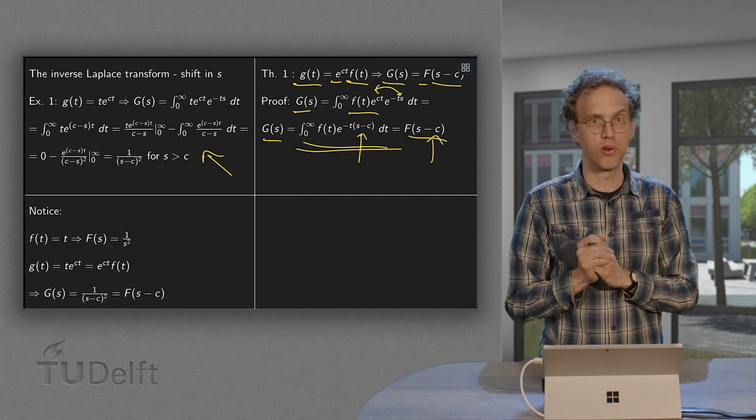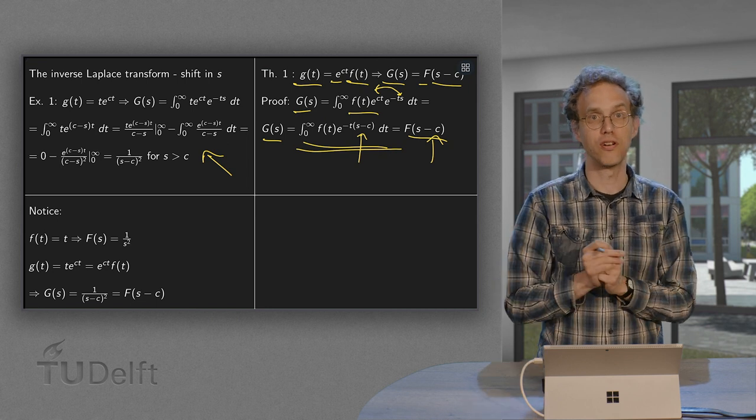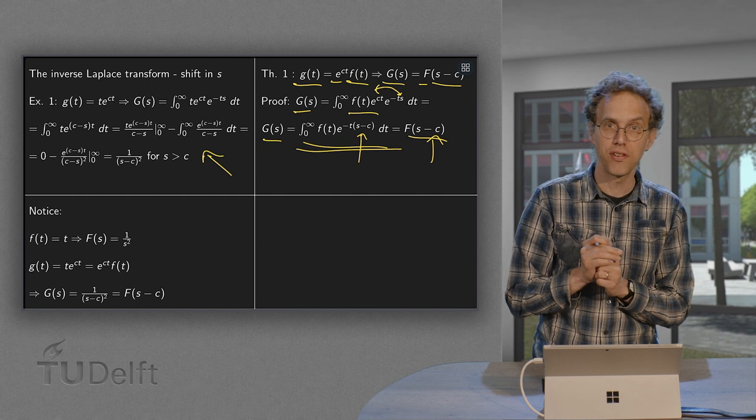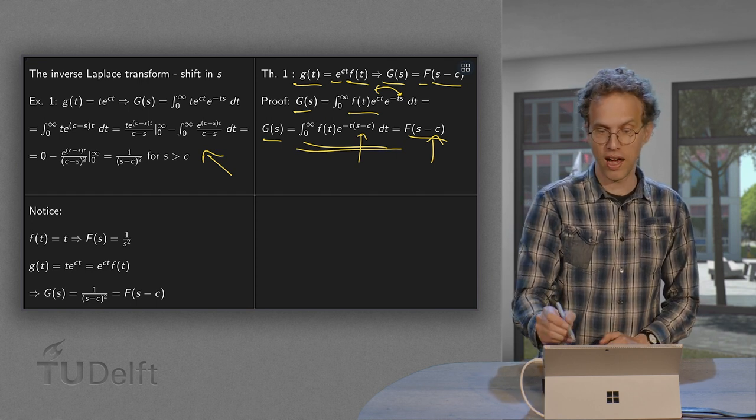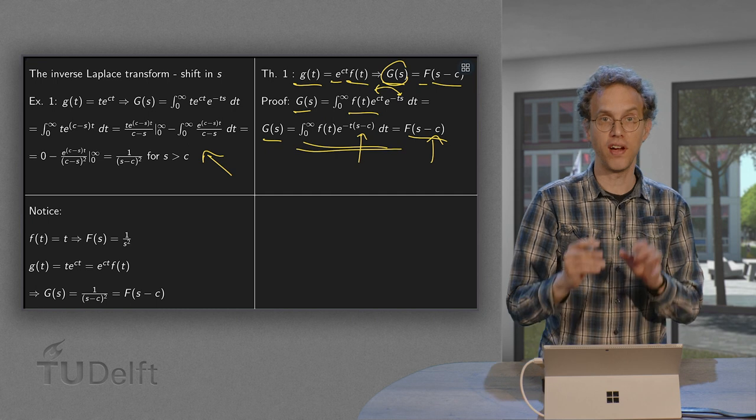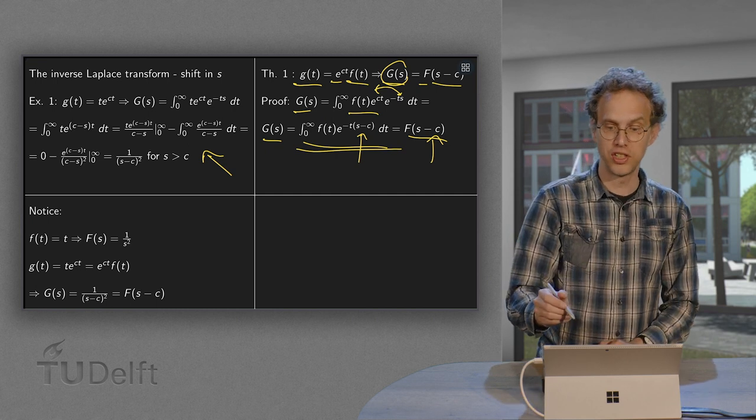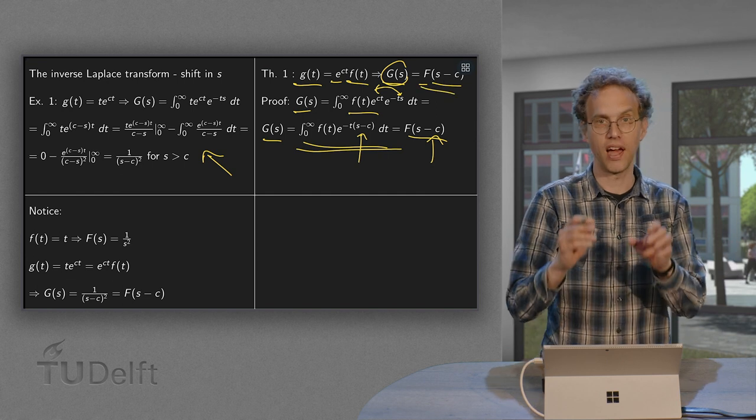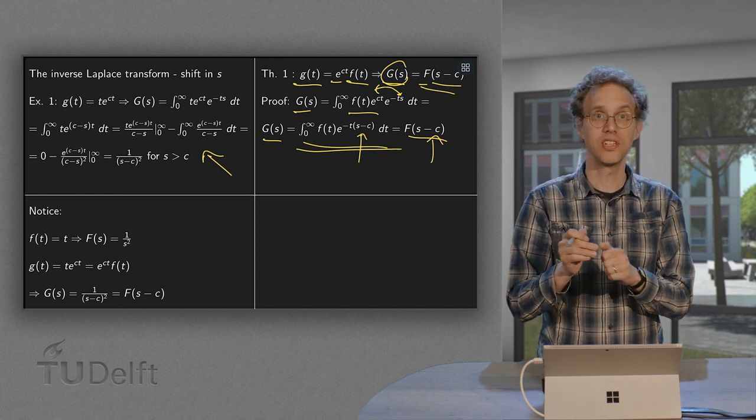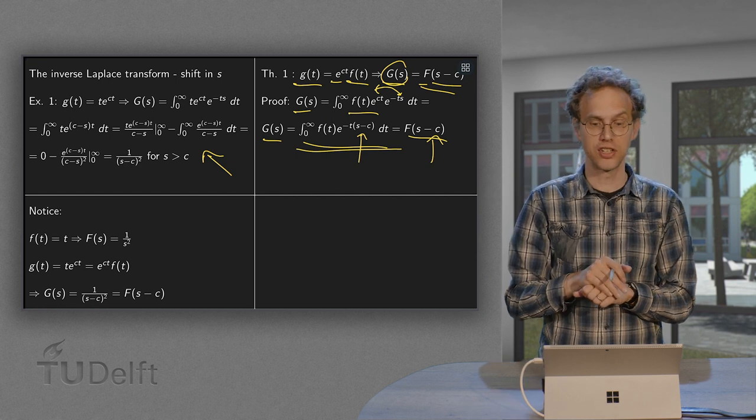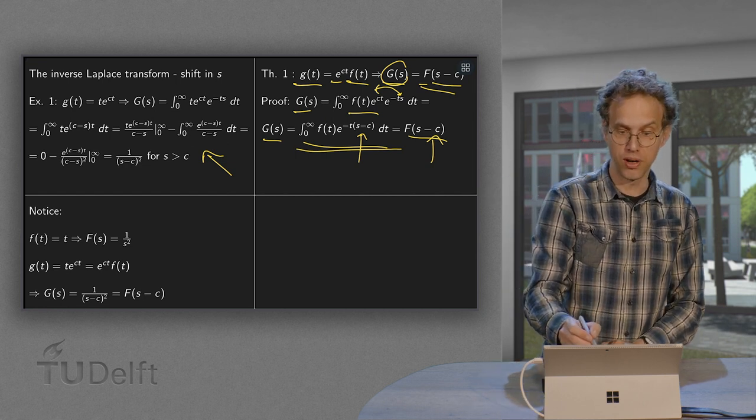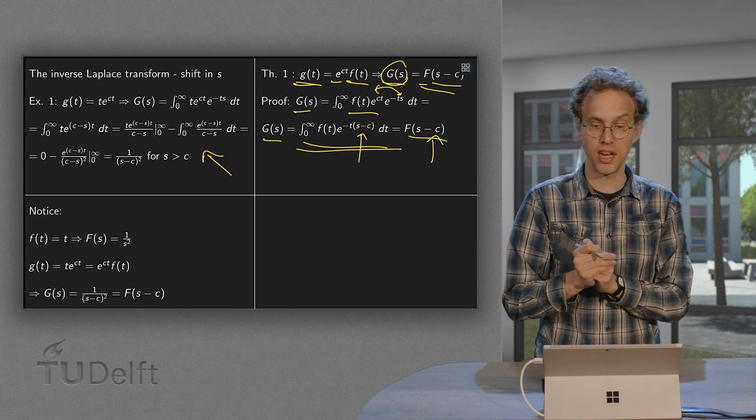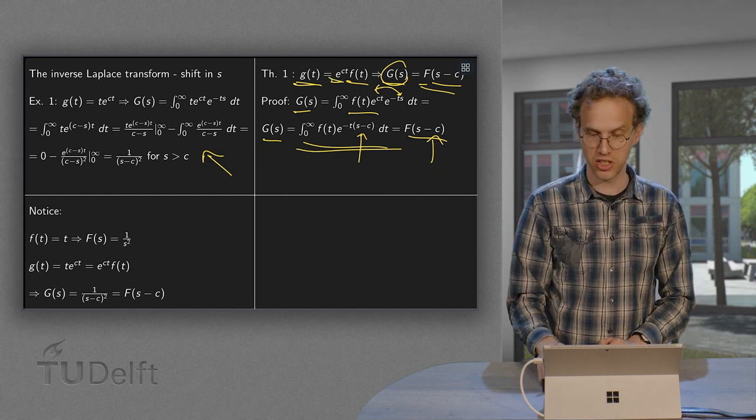This, in principle, allows you to take Laplace transforms, but it's much more useful to take inverse Laplace transforms. So if you have some function G(s), some new function which you can rewrite to a known function F(s-c), where c is some constant, then you can immediately transform back, because you know your g(t) is your F(t), which you know is in your table, times e^(ct). So that's the trick.